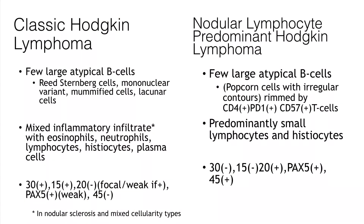Summarizing the features of classical Hodgkin lymphoma: a mixed infiltrate with eosinophils, neutrophils, histiocytes, small lymphocytes, and plasma cells, interspersed with large atypical cells that are generally positive for CD30, sometimes positive for CD15, sometimes partially and weakly positive for CD20, generally weakly positive for PAX-5, and negative for CD3 and CD45. Despite sharing some characteristics, the pattern, type of infiltrate, morphology, and especially the immunophenotype of the large atypical cells provide a nice contrast that allows you to separate classical Hodgkin lymphoma from nodular lymphocyte predominant Hodgkin lymphoma.